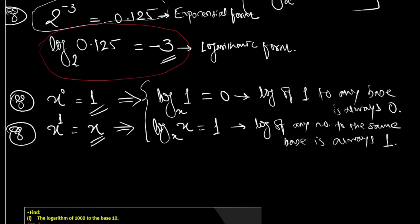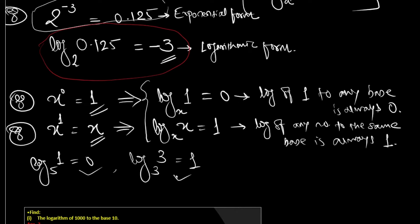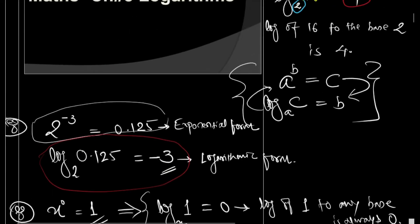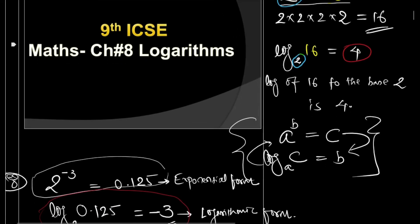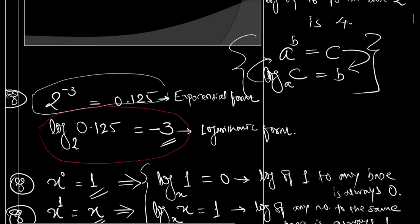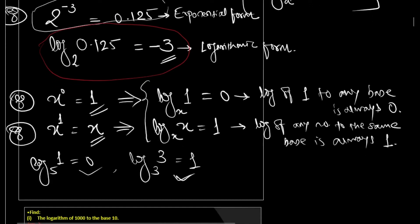Quick practice: log of 1 to the base 5 is 0. Log of 3 to the base 3 is 1. We've now applied both laws. You know what logarithm is, how to convert between exponential and logarithmic forms, and the two general laws of logarithm.